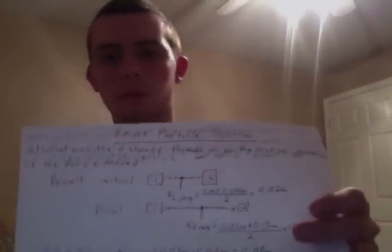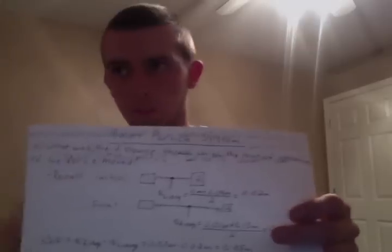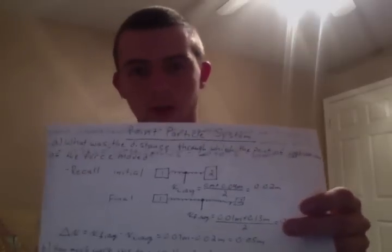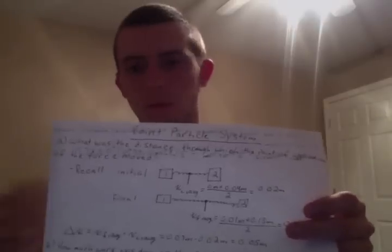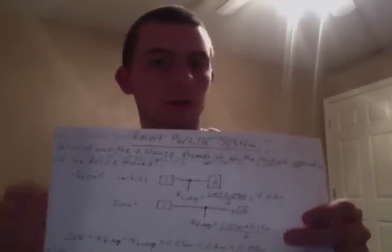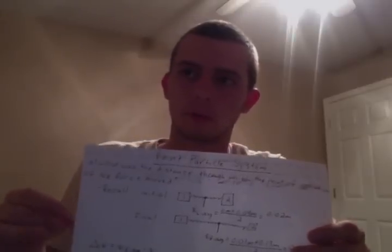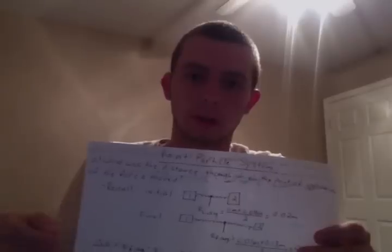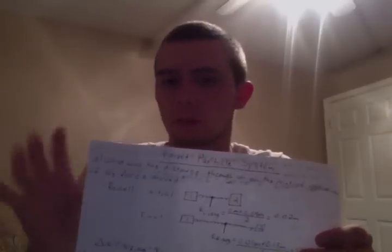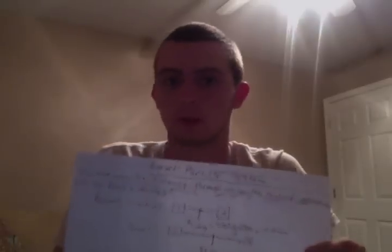Part C is asking for what form or forms of energy change throughout the process. And for point particle systems, the only form, the only energy forms that change is translation, not vibrational, not any other forms. It's only translation. And that is if there's a translation, there's a translational kinetic energy occurring, which is pretty much any movement of an object or set of objects.